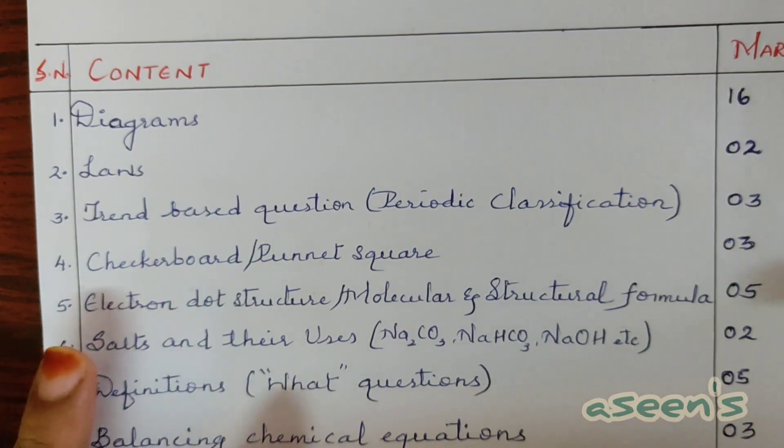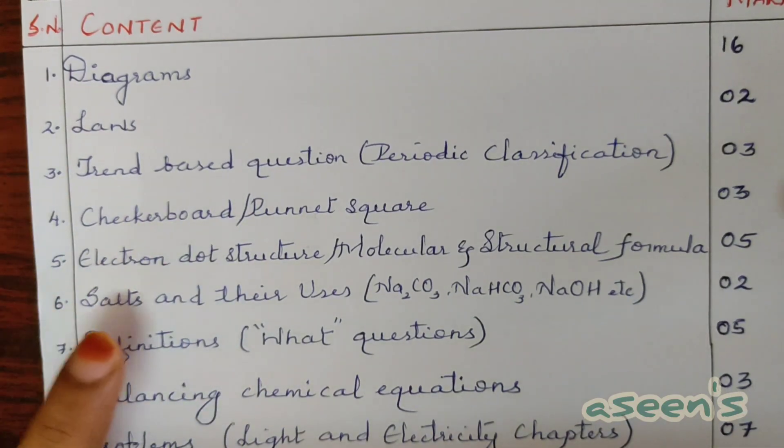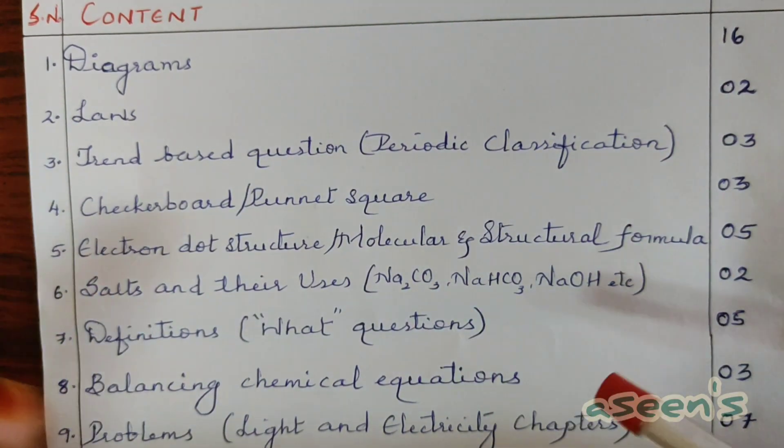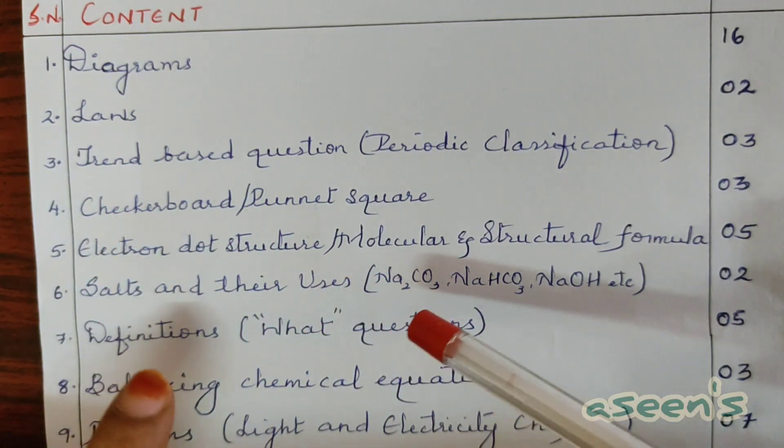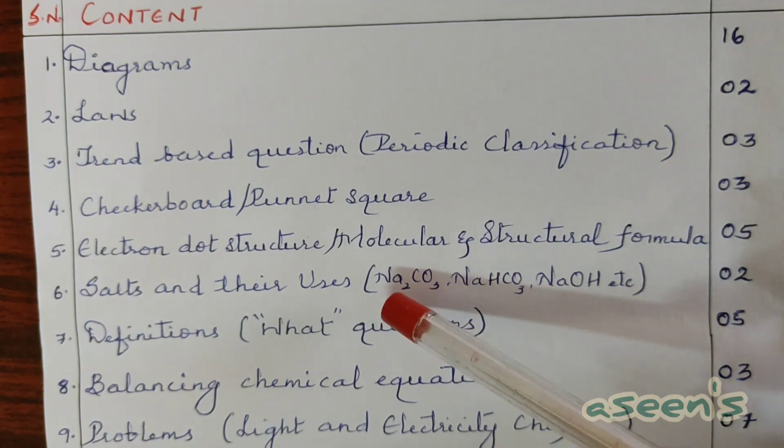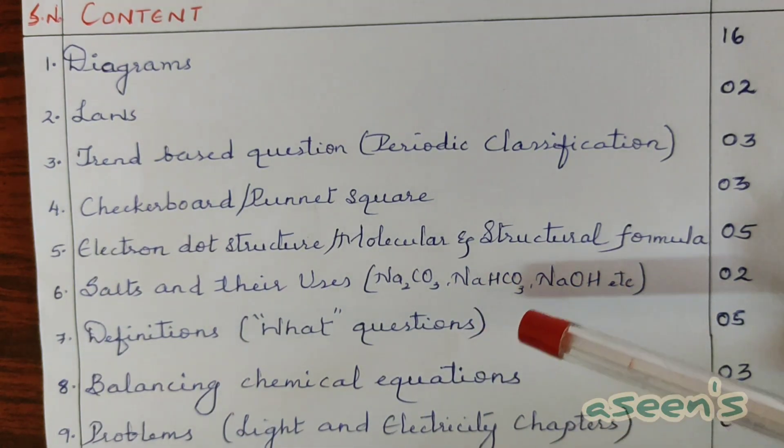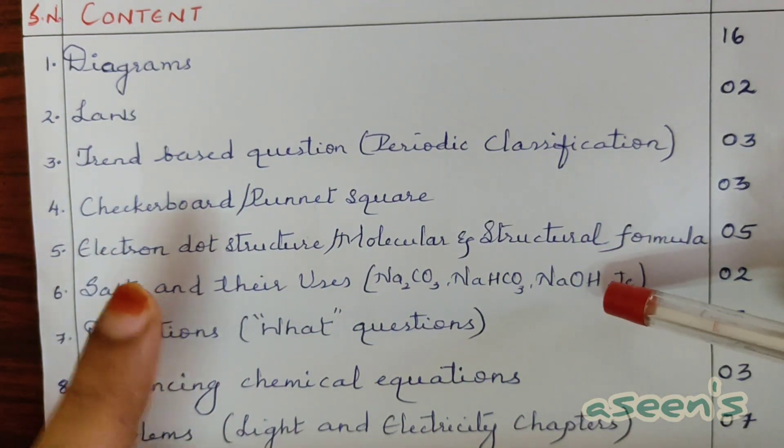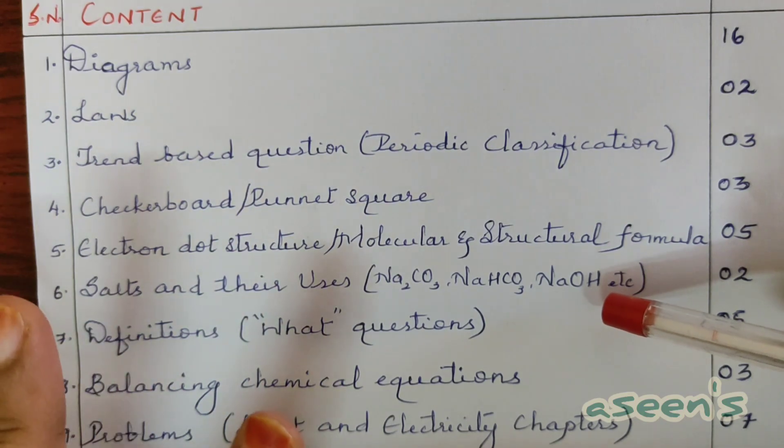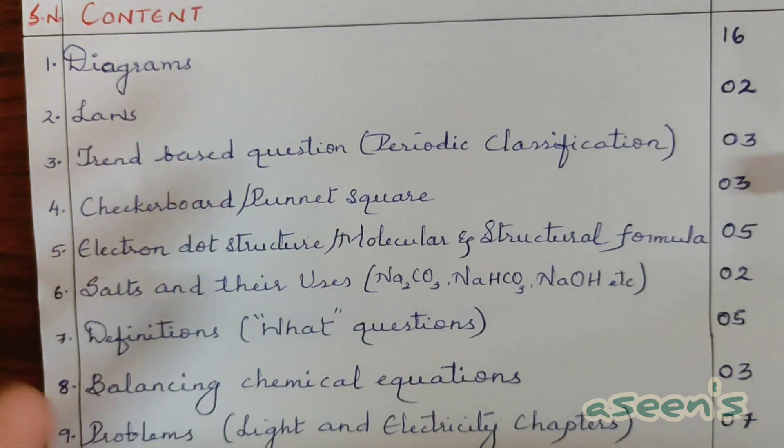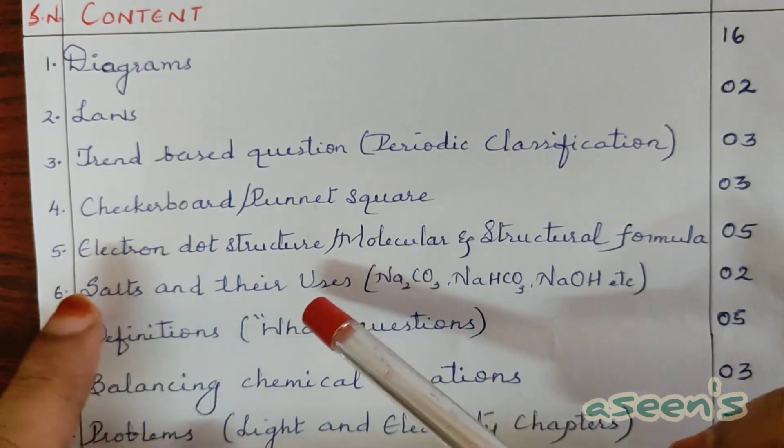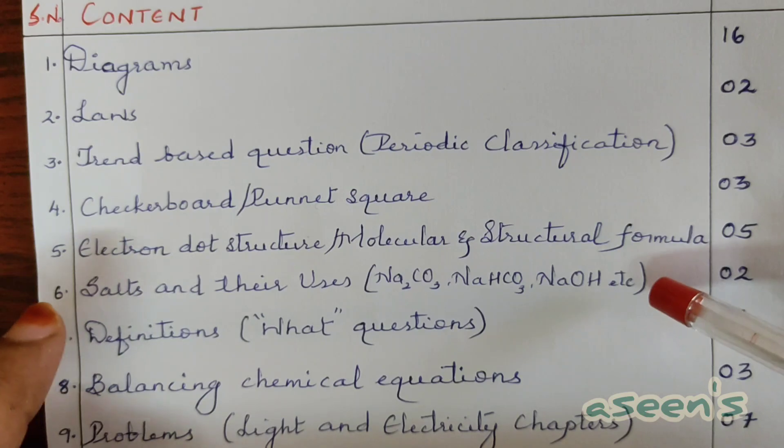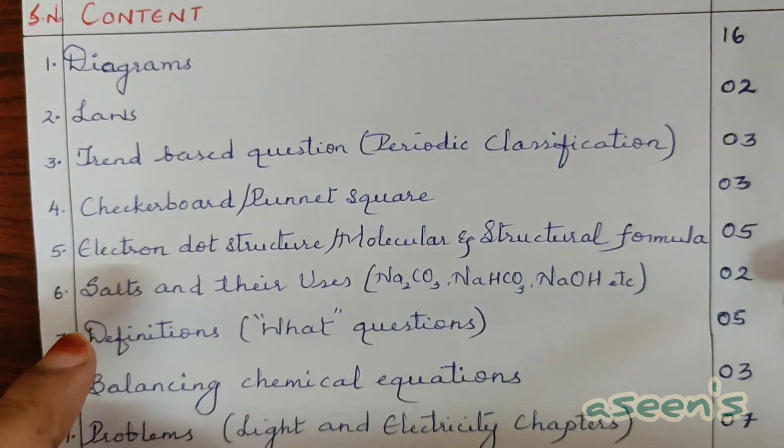This is also from the chemistry part - salts and their uses from the second chapter acid, bases, and salt. We have got a few salts like sodium carbonate, sodium bicarbonate, bleaching powder, sodium hydroxide, etc. All the salts are very important because among this at least two marks will be allotted. They can ask you any use, the molecular formula, the preparation, etc. This is a very easy concept to remember, like a granted two marks.